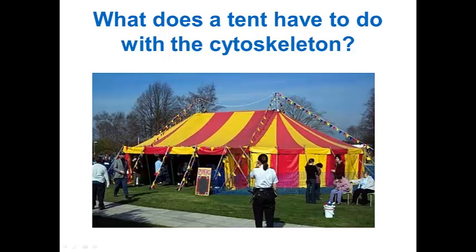First we can see tent poles, which are very similar to the microtubules because they're very strong and very rigid and they provide much of the support and shape for the tent. Next we have thick cables, so intermediate filaments can be compared to steel cables because they're a little more flexible than microtubules, however they're very very strong. And finally we have the ropes, which are actually the least strong polymer and they're capable of movement, so these are the most flexible of the cytoskeletal polymers.